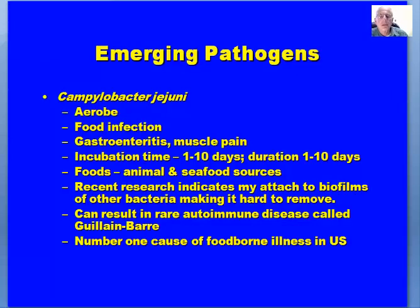Campylobacter jejuni is an emerging pathogen — a microaerophile causing food infection — so you're consuming food with a live microorganism. Symptoms include gastroenteritis with muscle pain. The incubation time for this particular pathogen can be very, very long, which may make it difficult to determine which food was responsible. The duration can be quite significant. It's typically been associated with animal and seafood sources. Recent research indicates it may attach to biofilms of other bacteria, making it very hard to remove from food contact surfaces. It can result in a rare autoimmune disease called Guillain-Barré syndrome and is the number one cause of foodborne illness in the United States.